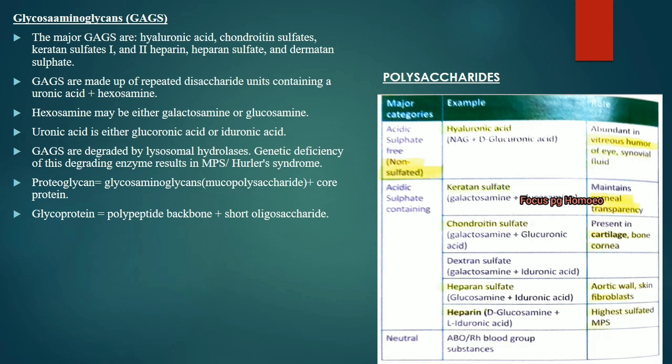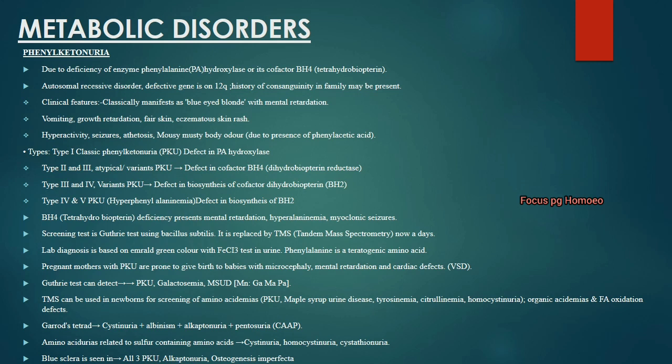Phenylketonuria (PKU) is the most commonly asked inborn error. Deficient enzyme is phenylalanine hydroxylase with cofactor BH4. It is an autosomal recessive disorder with the gene defect on chromosome 12q. There is a history of consanguinity in the family. The patient presents with blue eyes, blonde hair and mental retardation, vomiting, growth retardation, fair skin and eczematous skin rash.